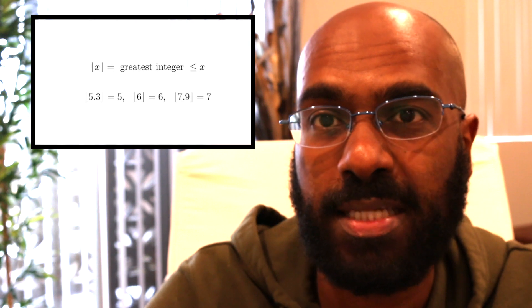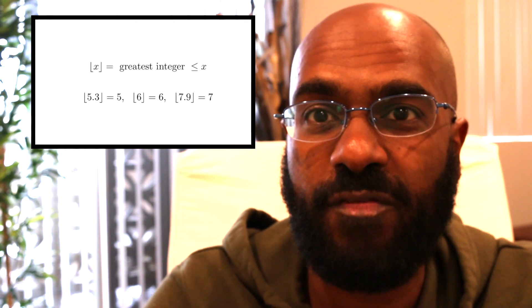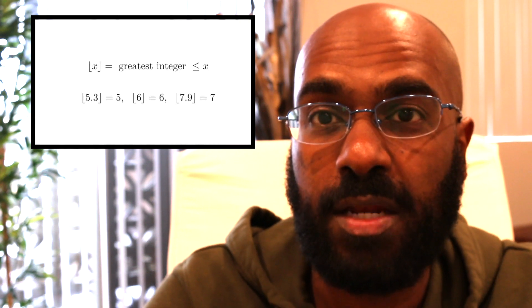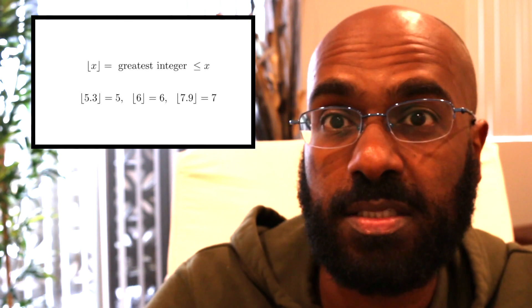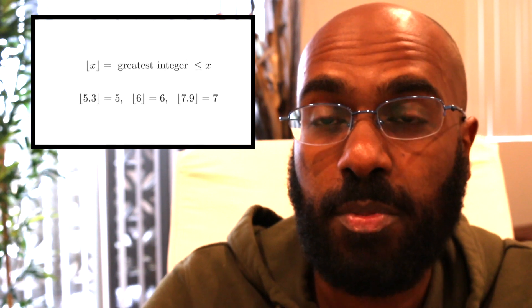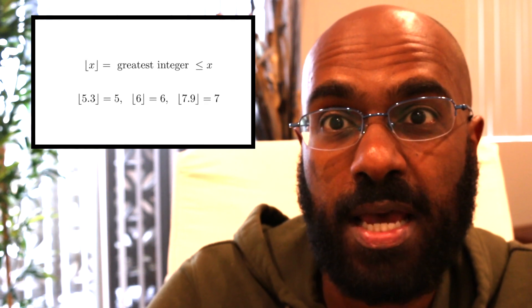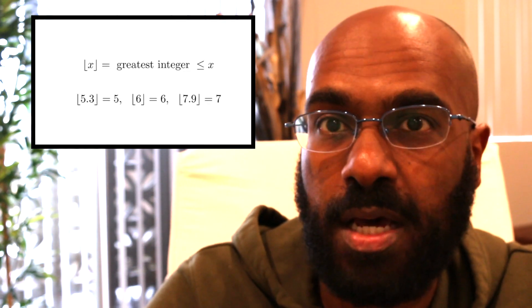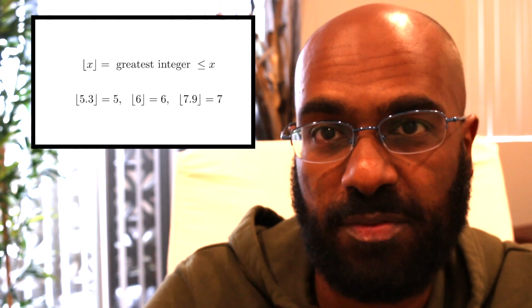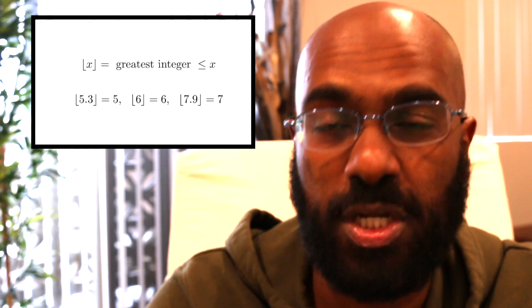So the floor of any real number is the greatest integer less than or equal to it. So for example, the floor of 5.3 is 5 and the floor of 6 is 6 itself, but the floor of 7.9 is 7. It's not the closest integer to 7.9, it's the integer just less than it.